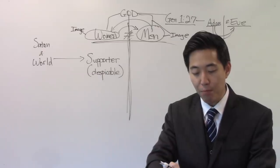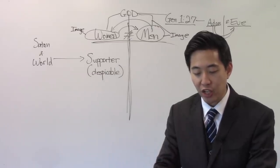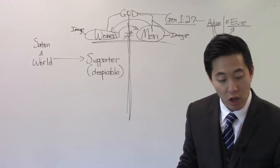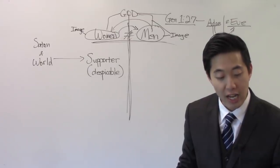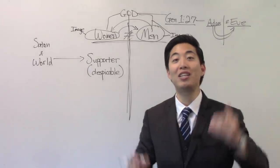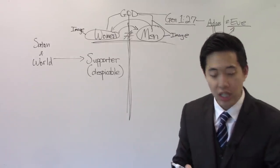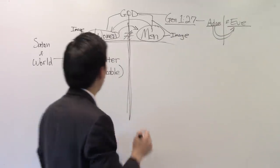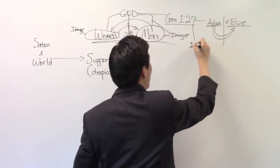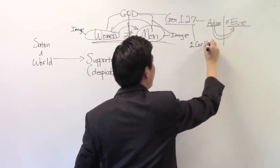And Adam said, This is now bone of my bones and flesh of my flesh. She shall be called woman. Why? Because she was taken out of man. See that? So this is very important to understand. 1 Corinthians 11 is definite proof.